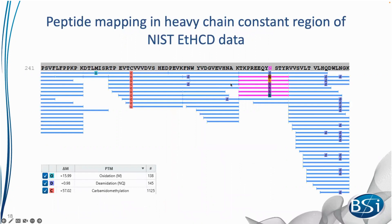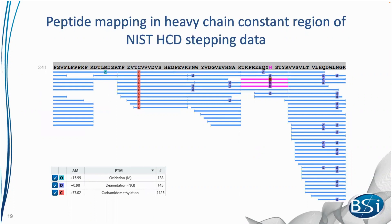From the NIST ETHCD data on the Lumos, all blue bars represent non-glycopeptides and pink bars represent glycopeptides in the peptide mapping. We identified six different glycopeptides mapping to the conserved glycosylation site in the antibody heavy chain constant region. The HCD method didn't perform as well — only three glycopeptides mapped to the same site — as HCD is better at fragmenting the peptide backbone rather than producing glycan fragmentation ions.